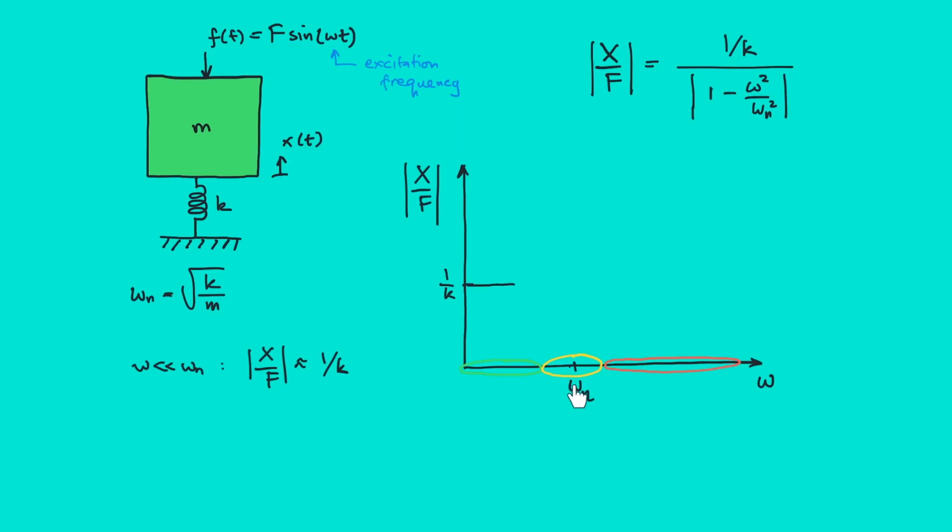Alright, now for the second region where ω is almost equal to ωₙ. This term ω over ωₙ will be equal to 1. 1 minus 1 is 0. So 1/k over 0 will give the magnitude X/F to infinity.